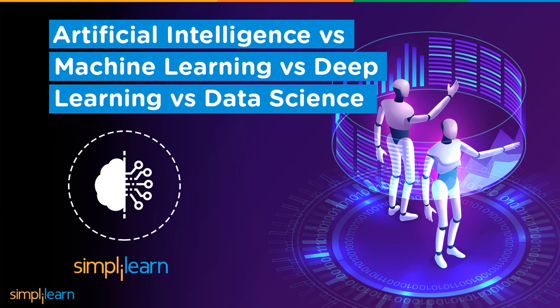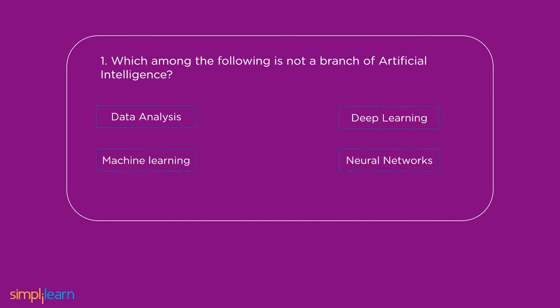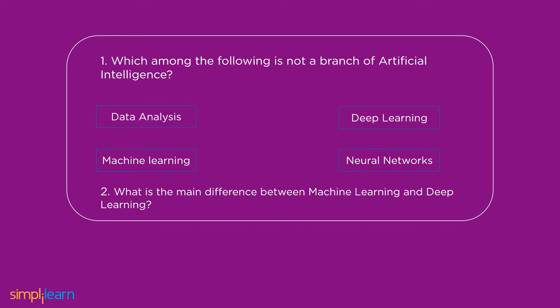Before moving on, let me ask you two interesting queries. Which among the following is not a branch of artificial intelligence: data analysis, machine learning, deep learning, or neural networks? And the second query is: what is the main difference between machine learning and deep learning? Please leave your answers in the comments section below and stay tuned to get the answer.